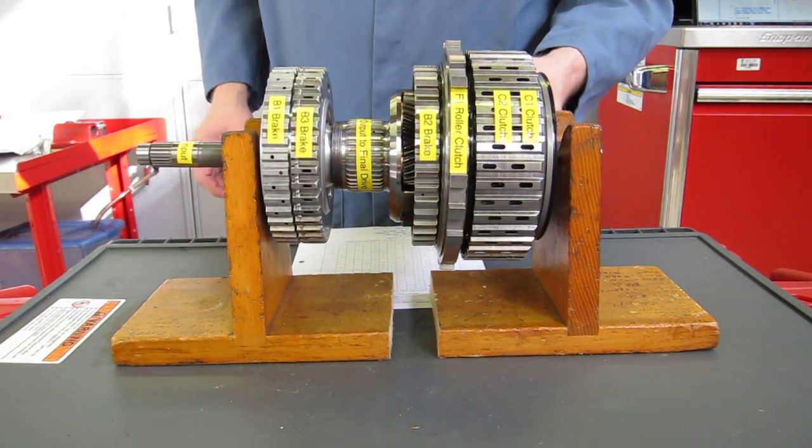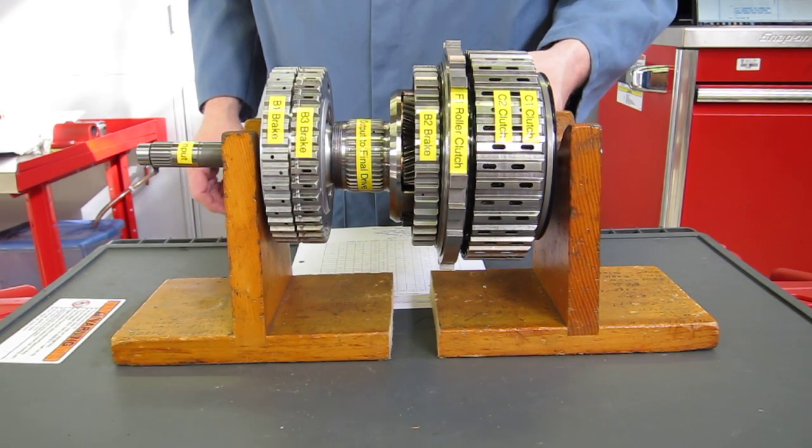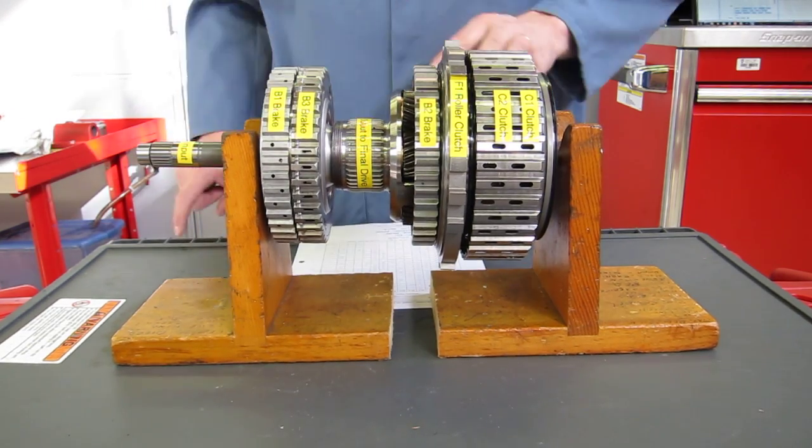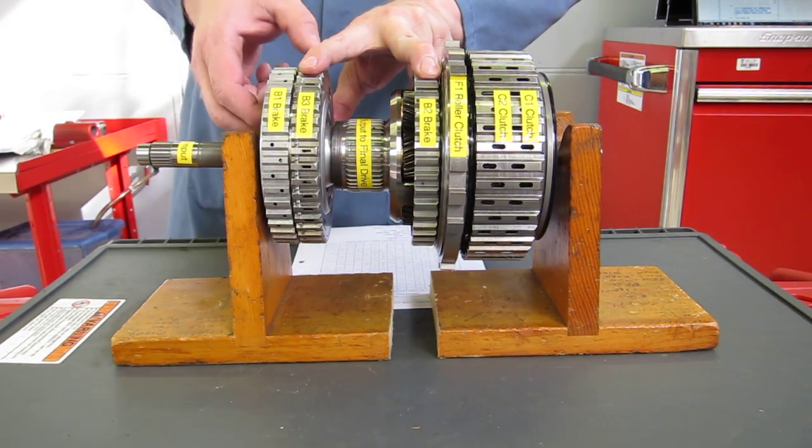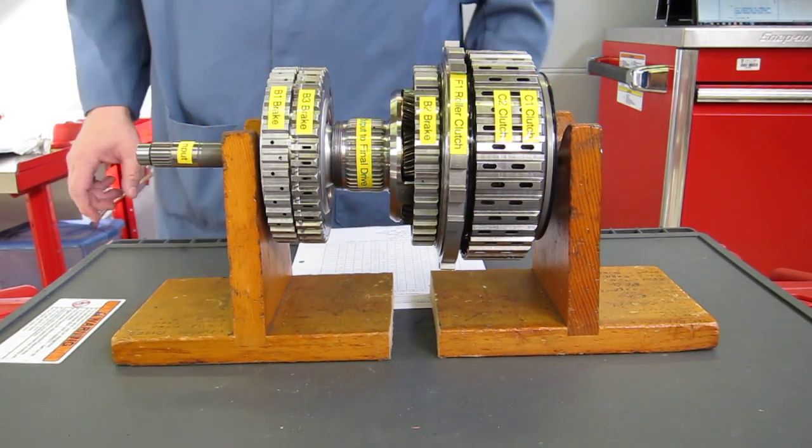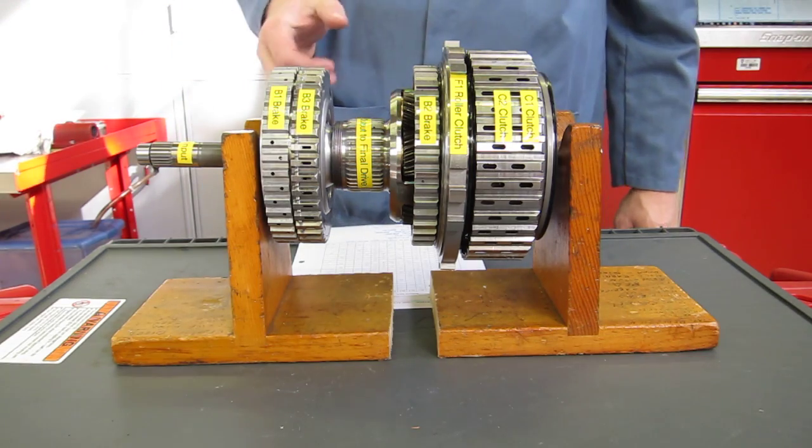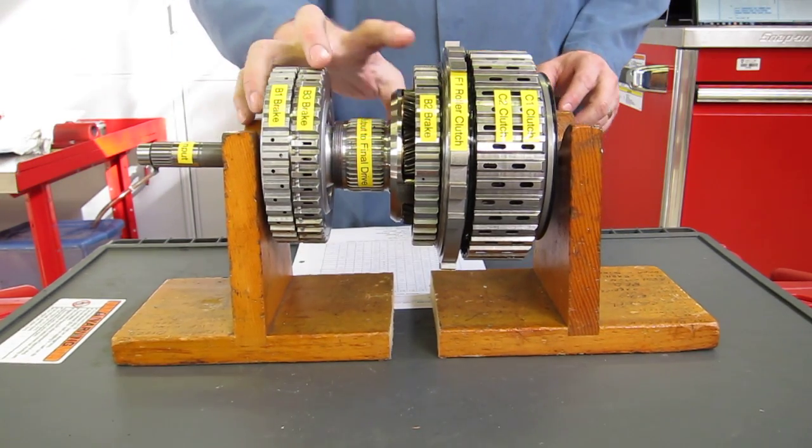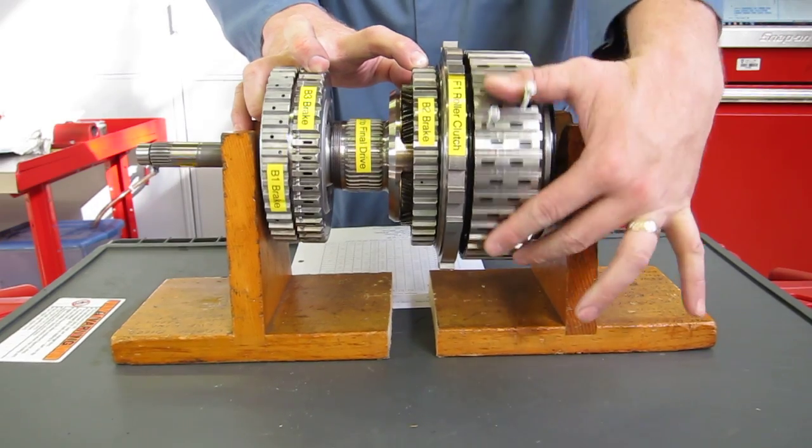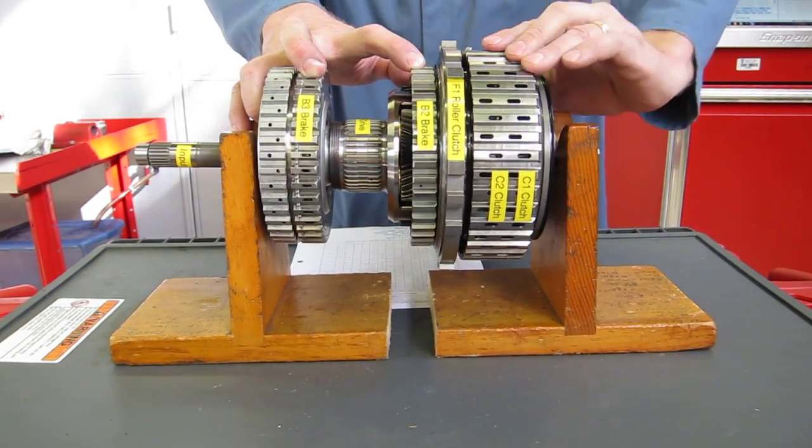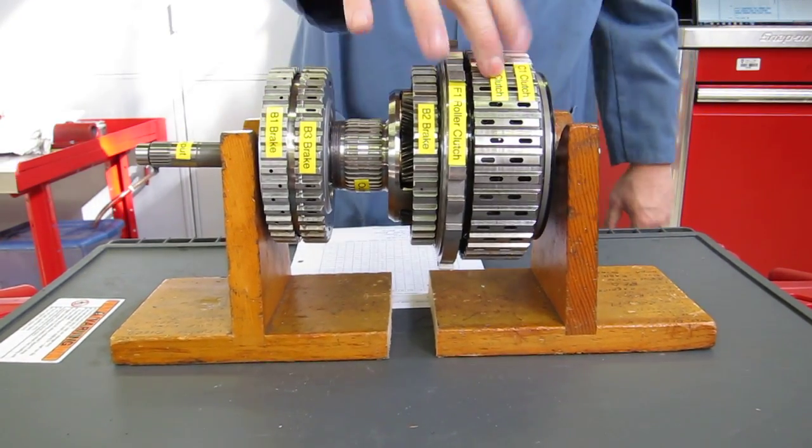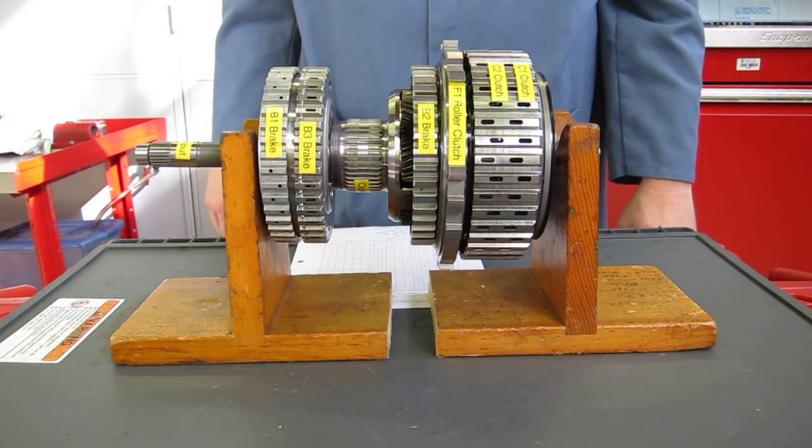Now let's go to reverse. To get reverse, we have to apply the B2 brake and the B3 brake at the same time. So we're going to stop both of those from rotating. And then we'll turn the input shaft from the engine. And since we're going to be turning it clockwise, we're going to expect the output shaft to turn counterclockwise. So we'll try to stop both of those from turning. I'll turn the engine. Notice that we're spinning backwards. And in this reverse, it actually is a really low gear ratio. It's a 4.18 to 1. So it will take four turns of the engine to get one turn of the output in reverse.